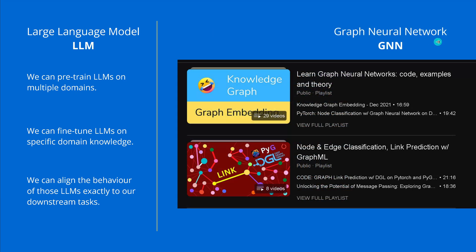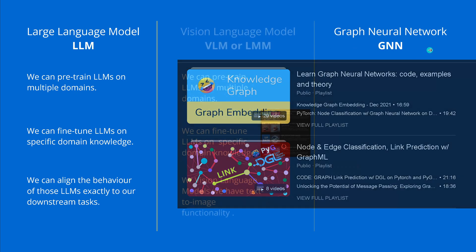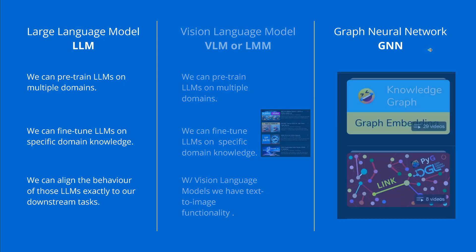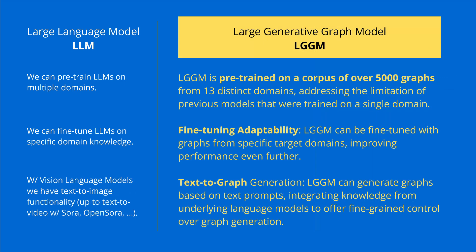We had our graph neural networks, with the knowledge graph, graph embedding, link prediction, node classification and everything. And now this new topic is exactly in between - we have large generative models, and now we extend it here to the graph.